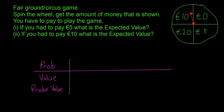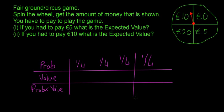The probability is going to say 1 over 4, 1 over 4, 1 over 4, and 1 over 4, and that's because you're equally likely to get each of the outcomes here. So you're equally likely to get 10 euro, 0 euro, 20 euro, and 5 euro.